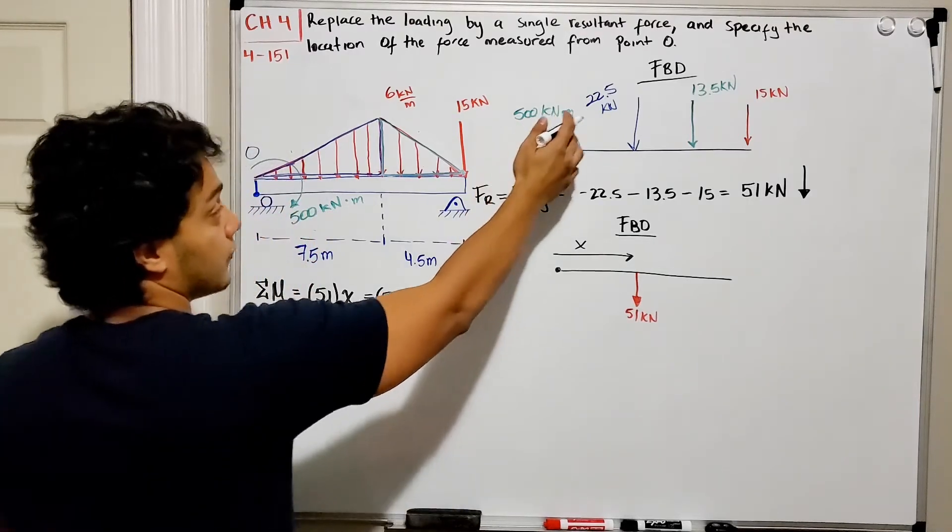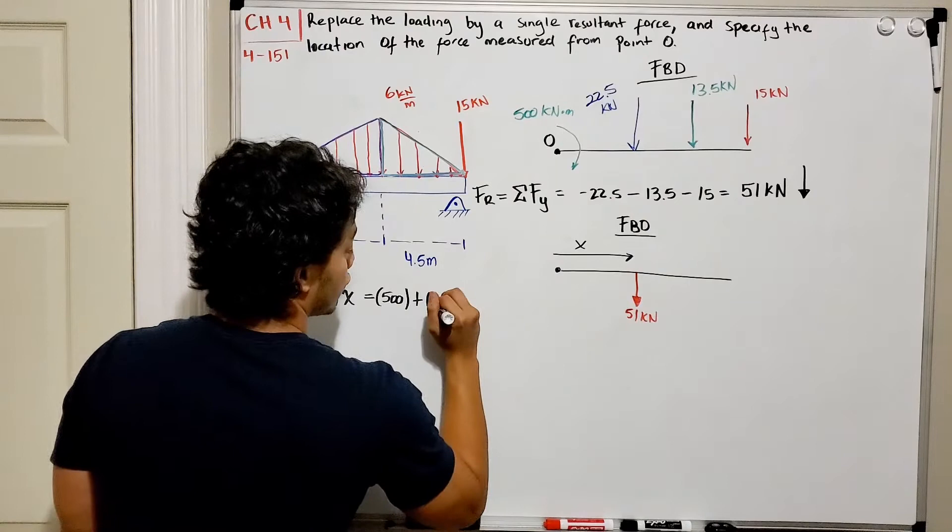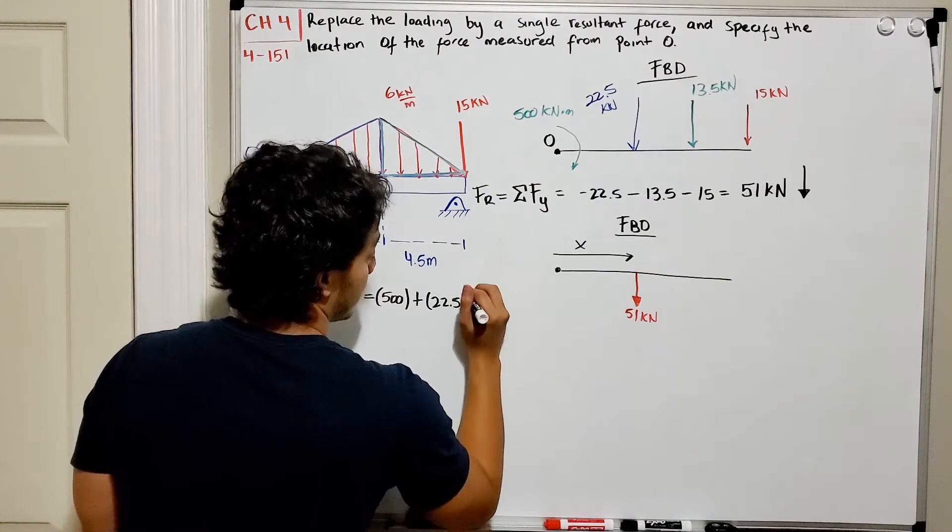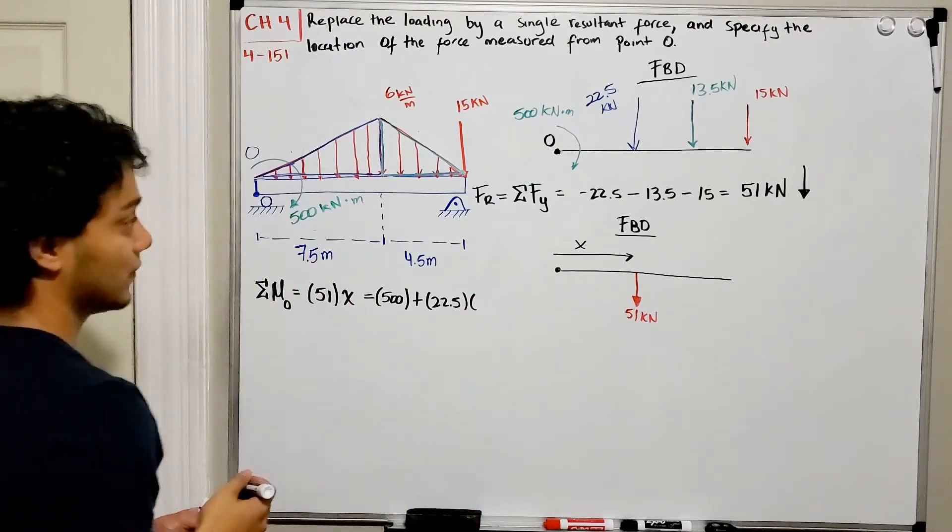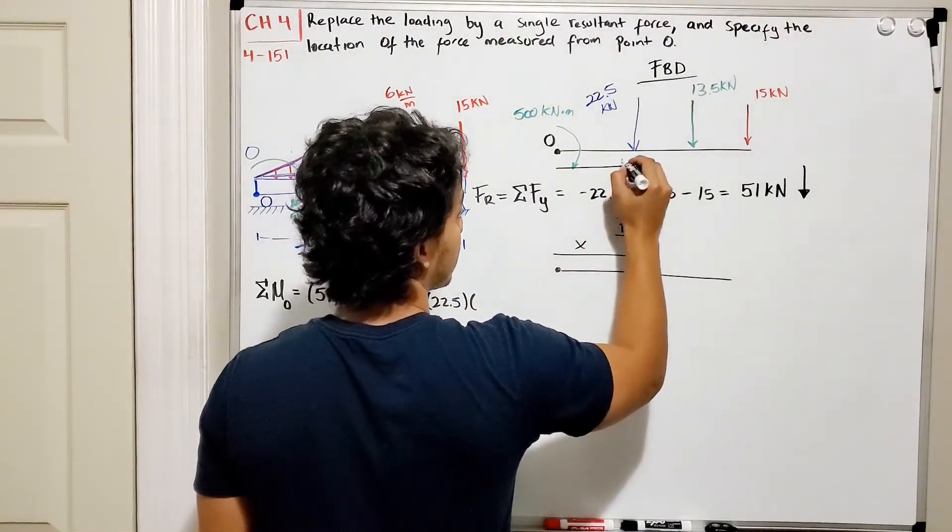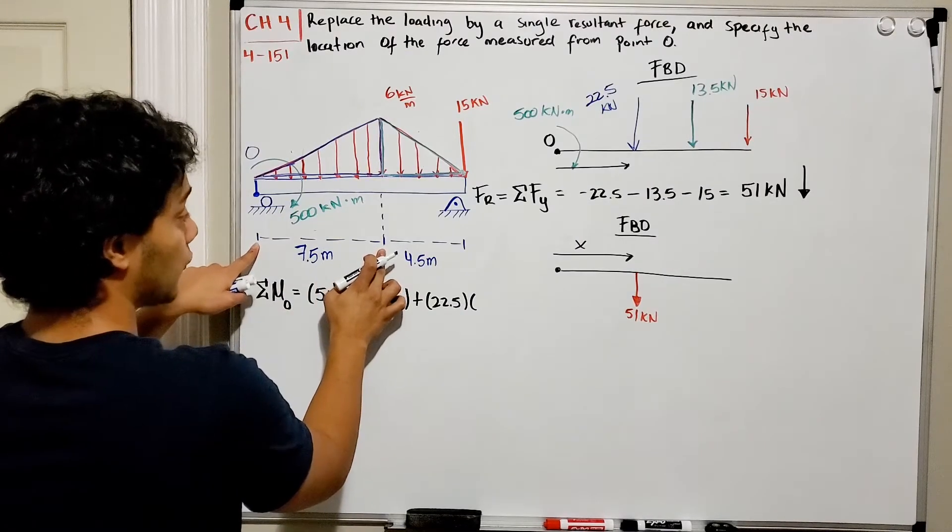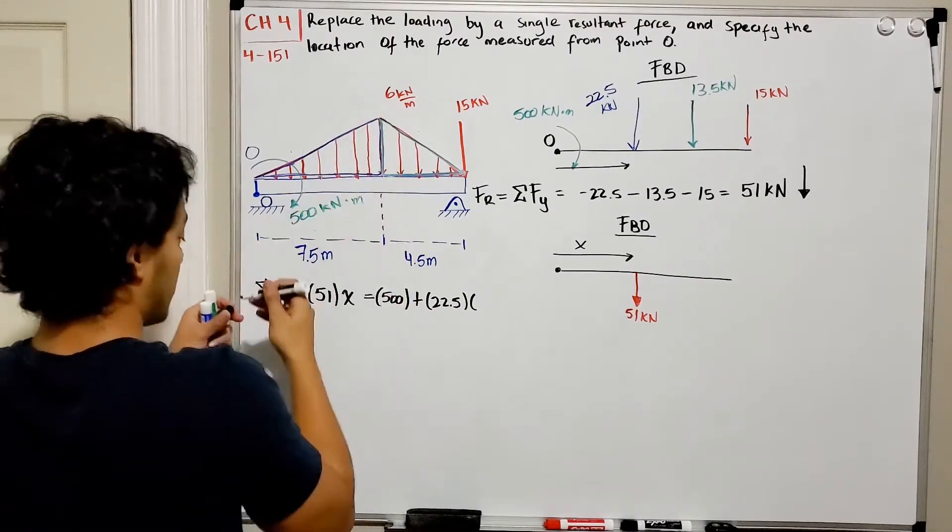And this moment has to be equal to the moment before when we had this system with the distributed loads and the 500 kN per meter. So I had 500 kN·m plus my force of the blue triangle which is 22.5 multiplied by the distance.